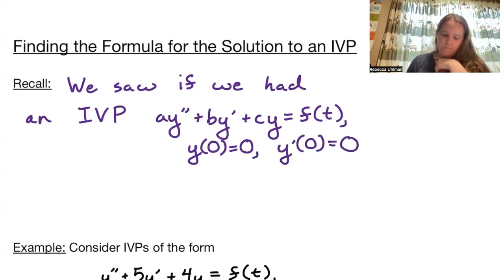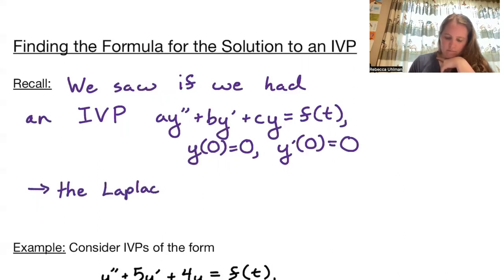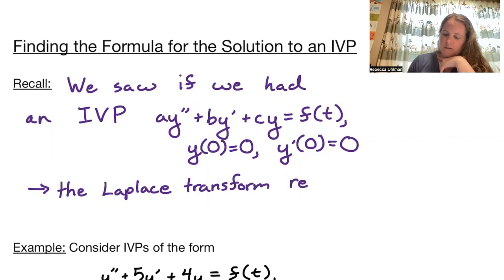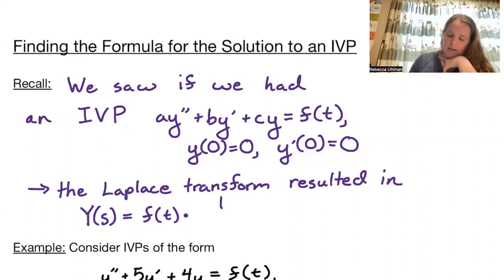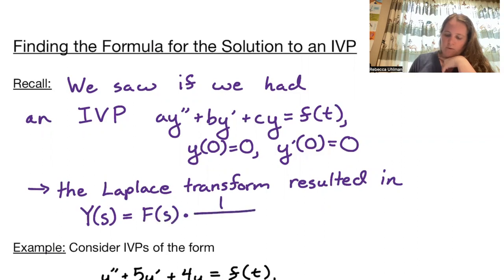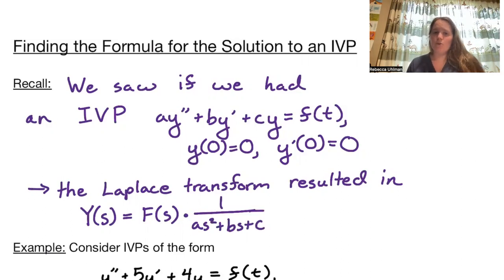Then the Laplace transform resulted in Y(s) equal to F(s) times 1 over the characteristic polynomial — that is, a·s² + b·s + c — and then we could find y(t) using convolutions.